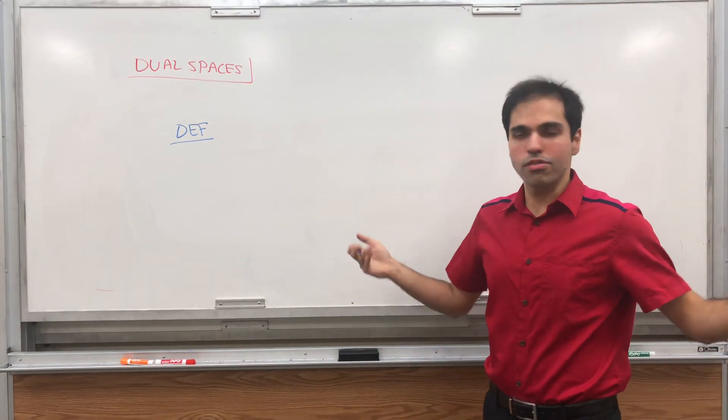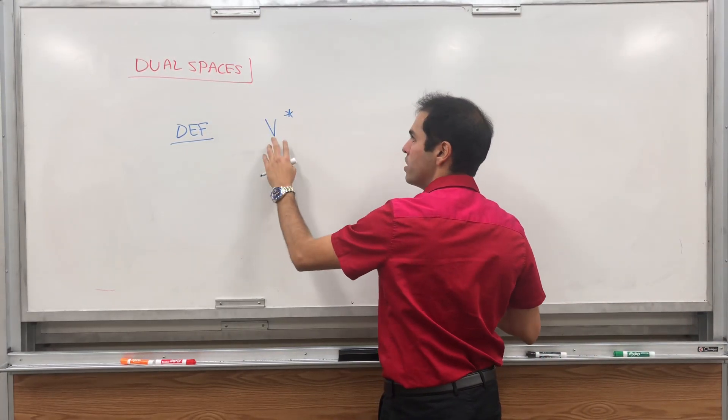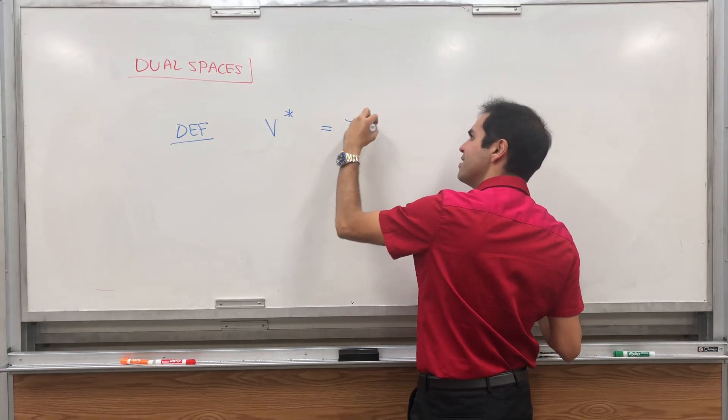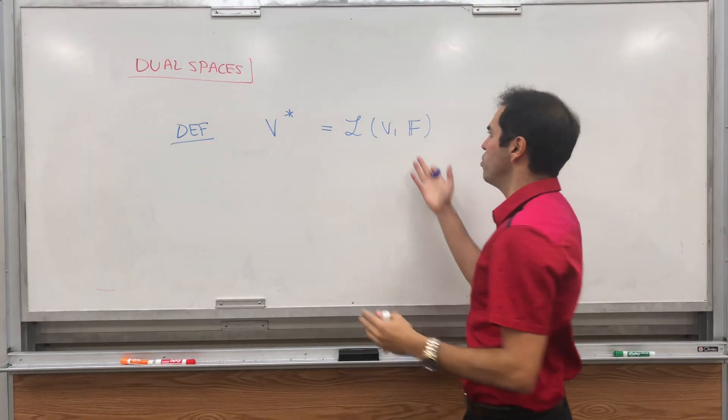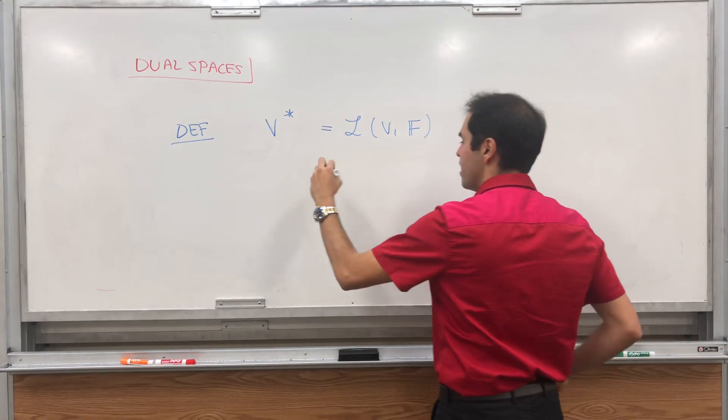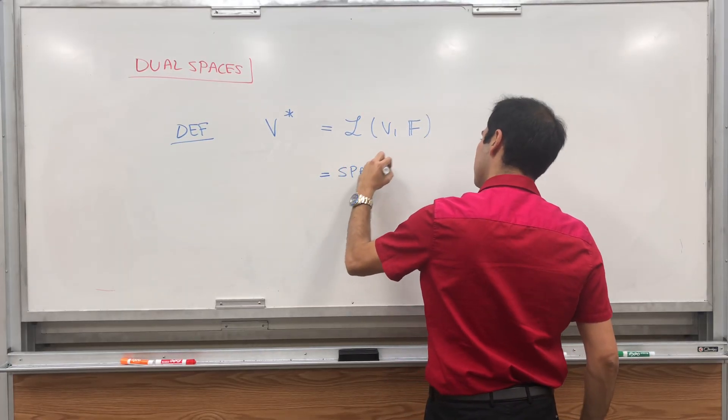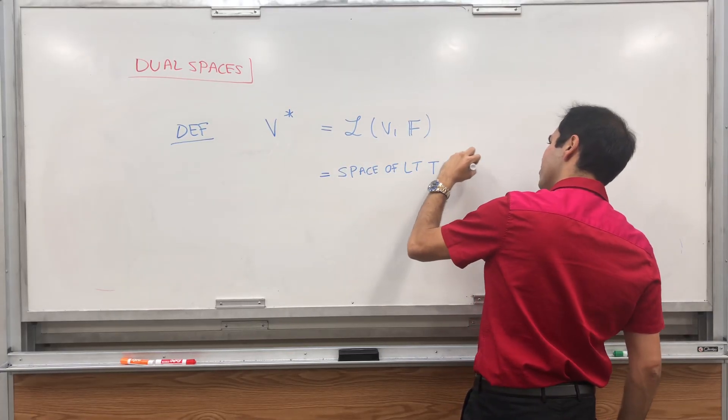So V star, given a vector space V, we define V star to just be the set of linear transformations from V to either R or C or any field. So space of linear transformations T from V to F.